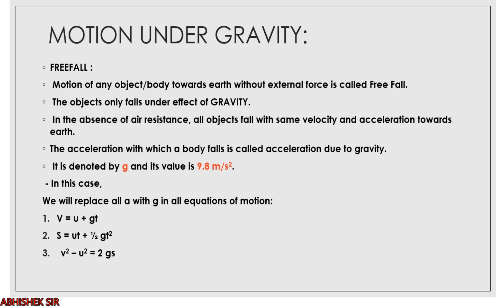Moving to the next topic: motion under gravity. Two cases are to be taken care of — either the object is falling from a height, or we are throwing the object upwards. If the object is falling, it is moving downward under the effect of gravity. If the object is moving upward, we have given it a force which is against gravity. Motion of any object towards the earth without any external force is called free fall.